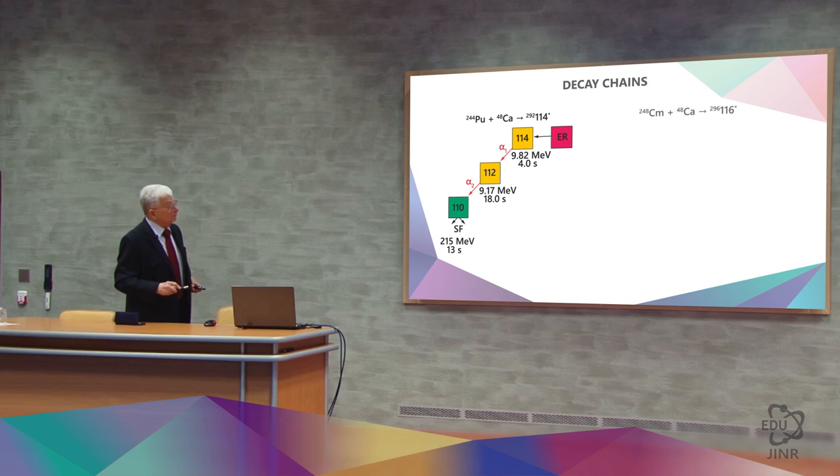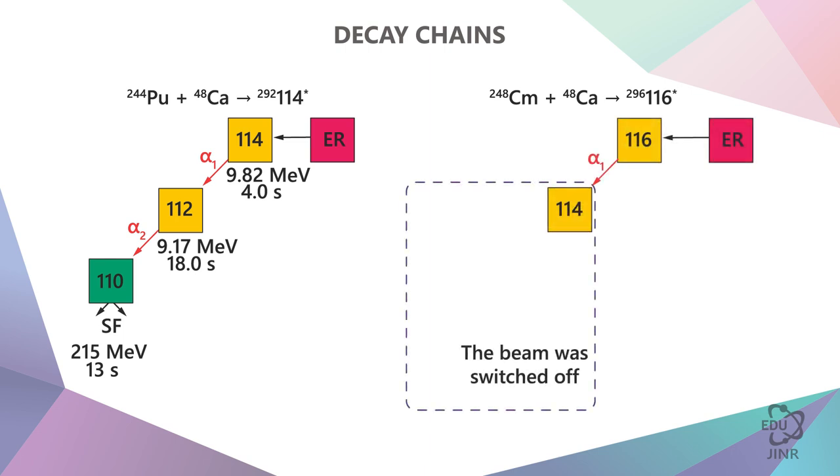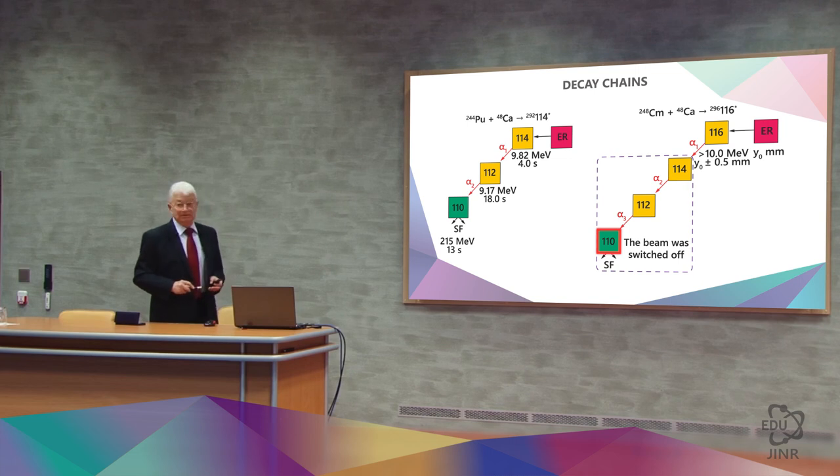And then we move one step upward and use curium instead of plutonium, resulting in the first alpha decay before we turn off the beam to avoid background noise. And without the beam and without electrical interference, we see the second decay and the third decay followed by spontaneous fission in a favorable environment.